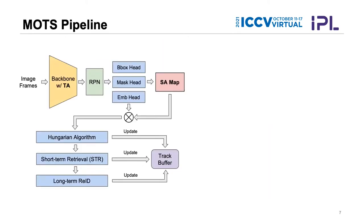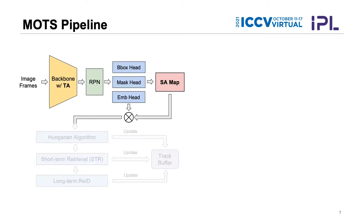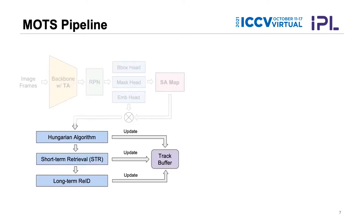The overall framework of our MOTS method is shown in this figure. It is divided into two parts. The first part detects objects with instance masks and extracts embedding features for tracking. The second part uses those embedding features to perform object tracking and obtain final tracking results.